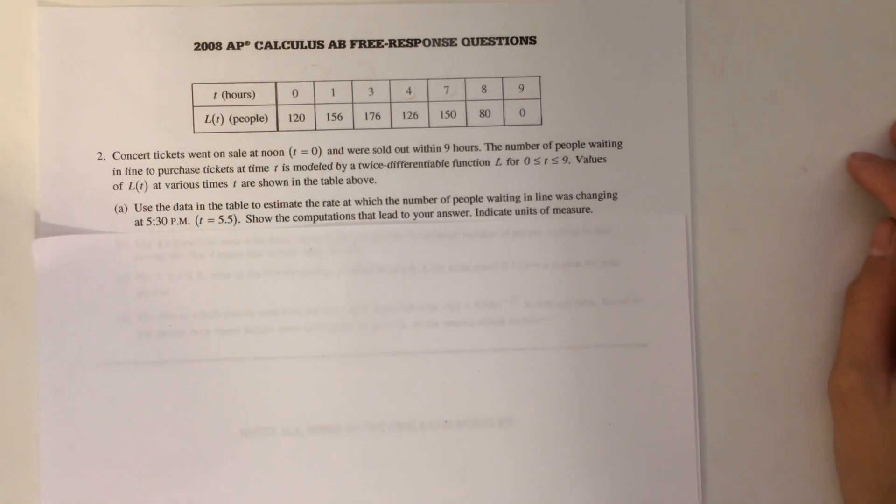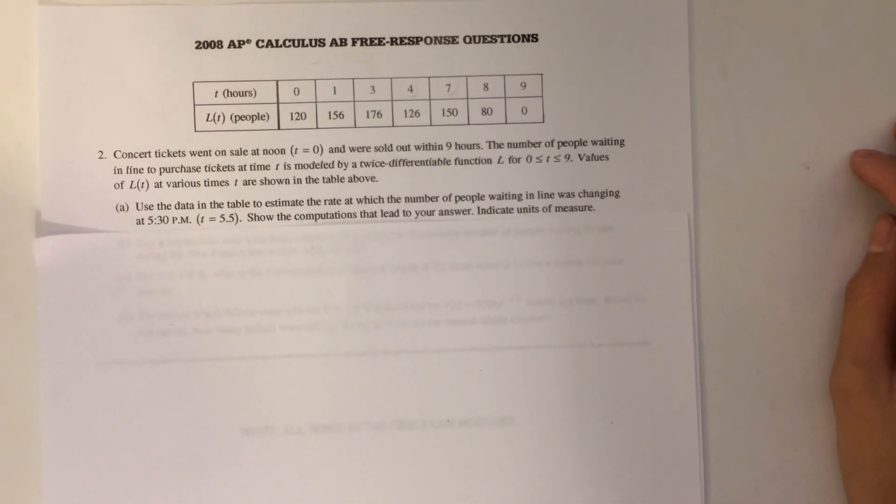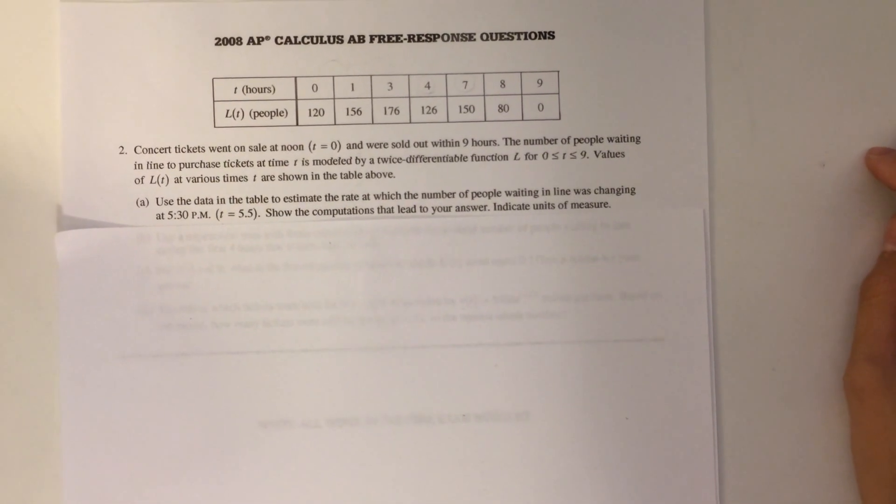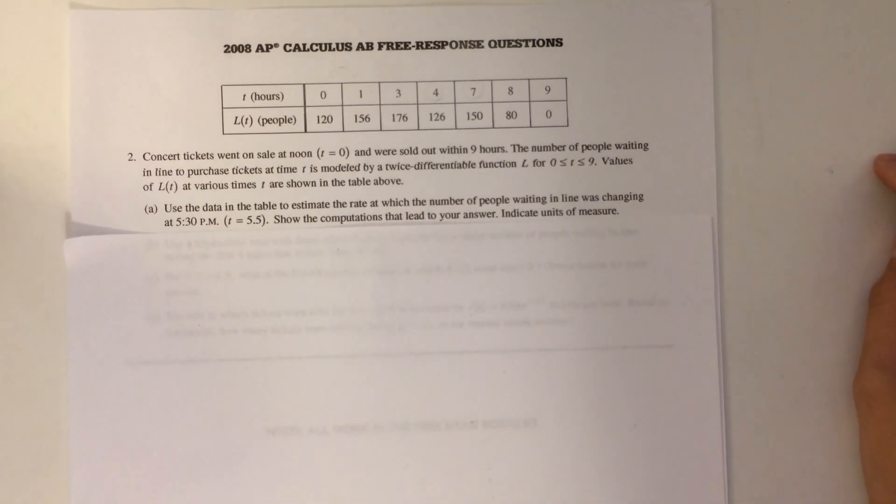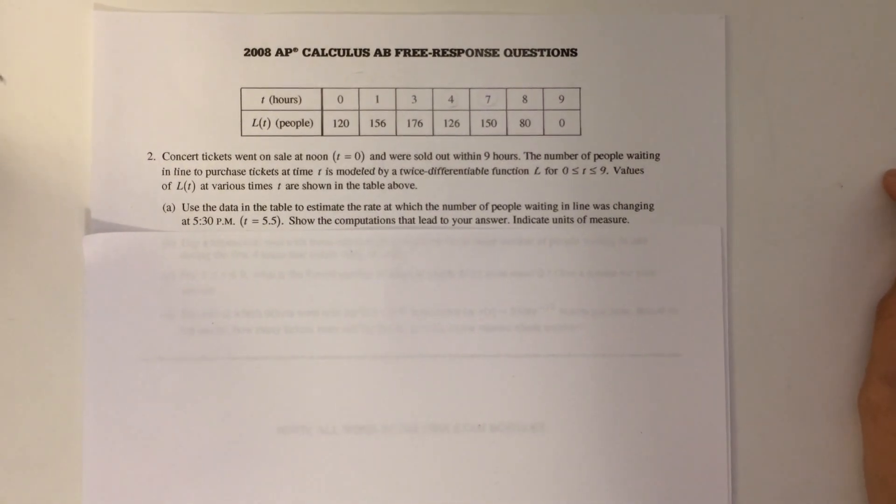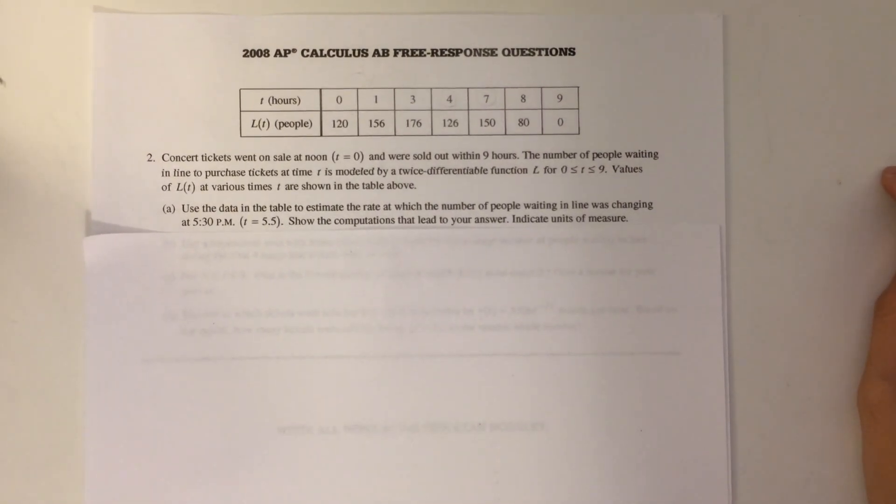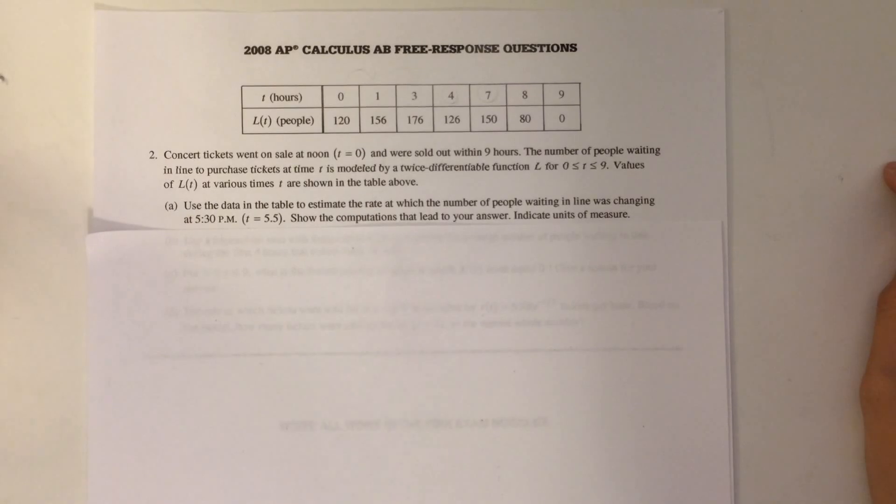Part A says, Use the data in the table to estimate the rate at which the number of people waiting in line was changing at 5:30 pm, t equals 5.5. Show the computations that led to your answer and indicate units of measure.